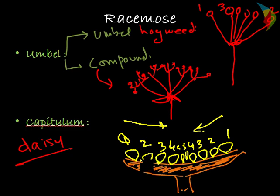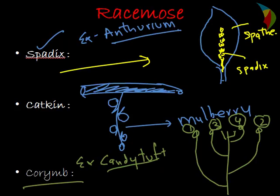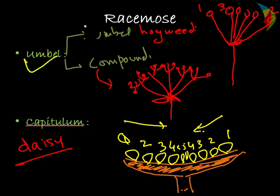So these are the eight types of racimose inflorescence with different structures: raceme type, panicle type, spike, spadix type, catkin, corymb, umbel — which is further divided into simple umbel and compound umbel — and finally capitulum type. In the next session we will discuss more about inflorescence, covering the cymose type and mixed type. Thank you.